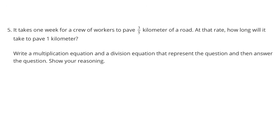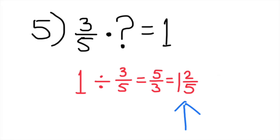Number 5. It takes 1 week for a crew of workers to pave 3 fifths kilometer of road. At that rate, how long will it take to pave 1 kilometer? Write a multiplication equation and a division equation that represents the question and then answer the question. 3 fifths times what number equals 1 and 1 divided by 3 fifths equals 5 thirds, which is equal to 1 and 2 fifths. At that rate, it would take 1 and 2 fifths weeks to pave 1 kilometer.